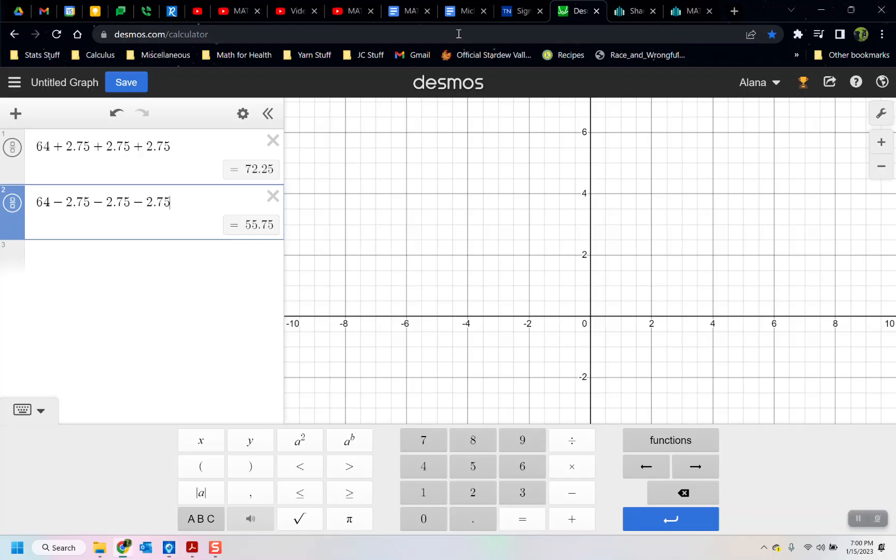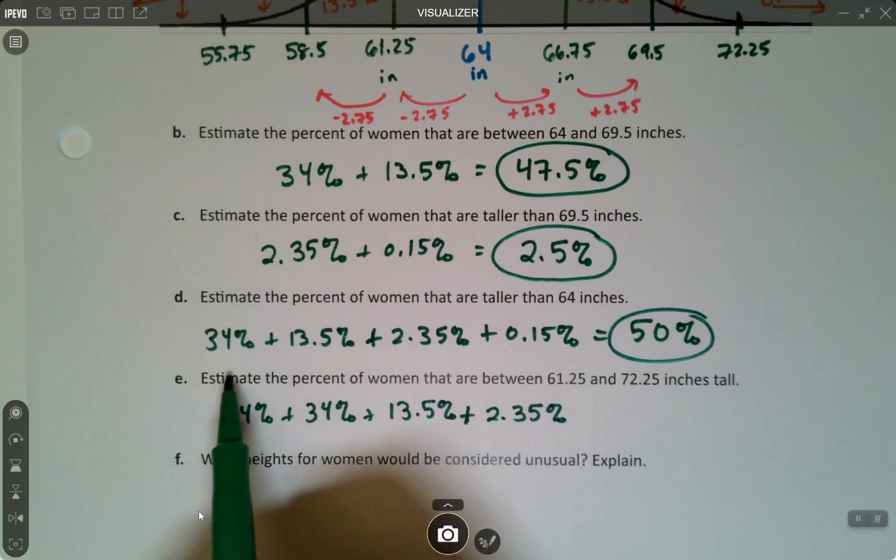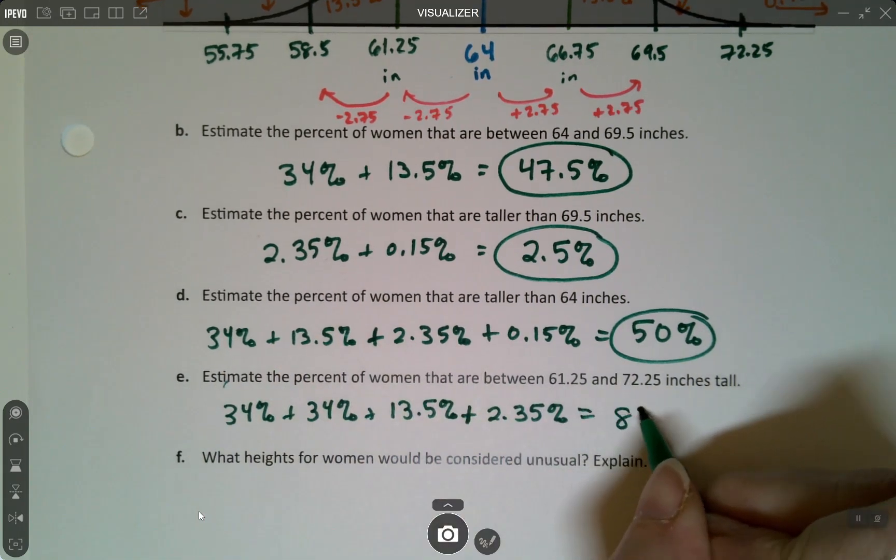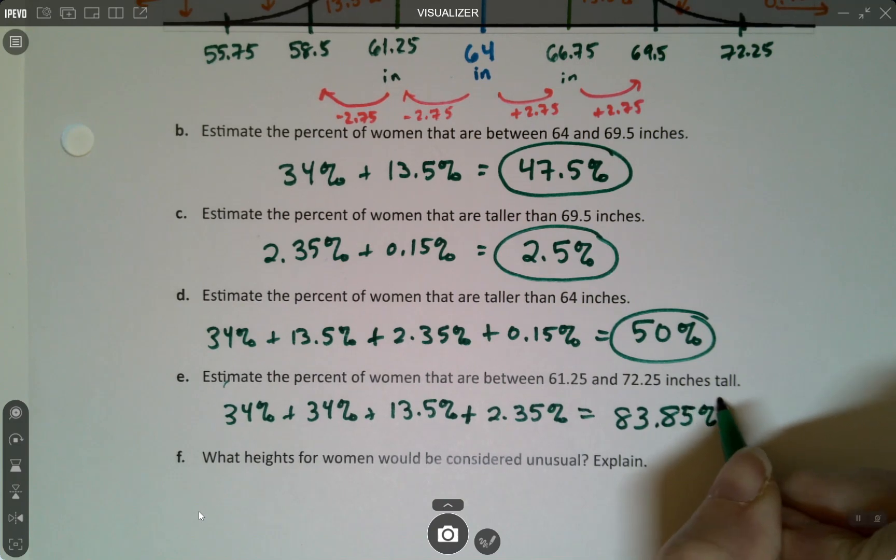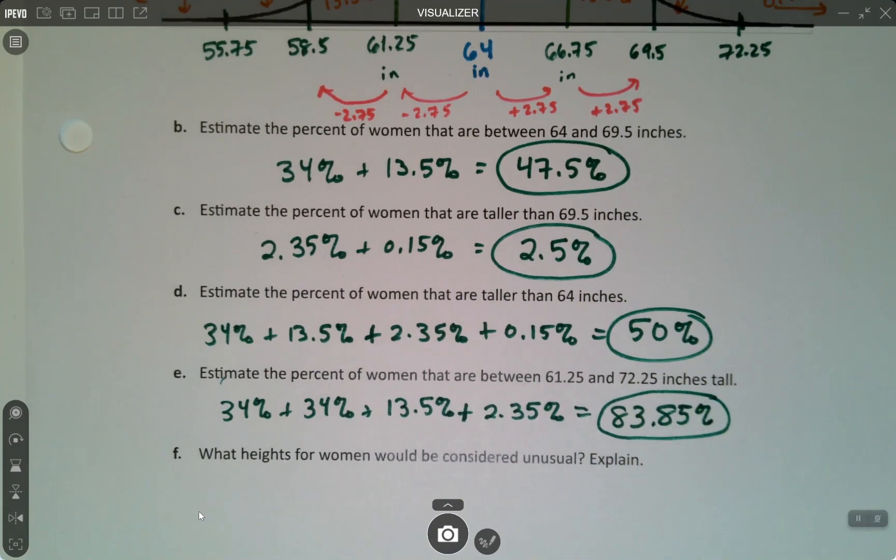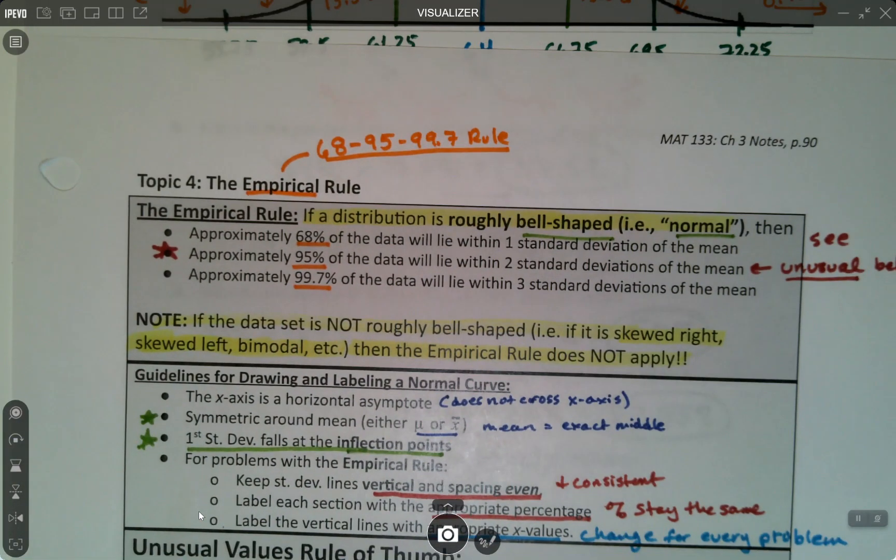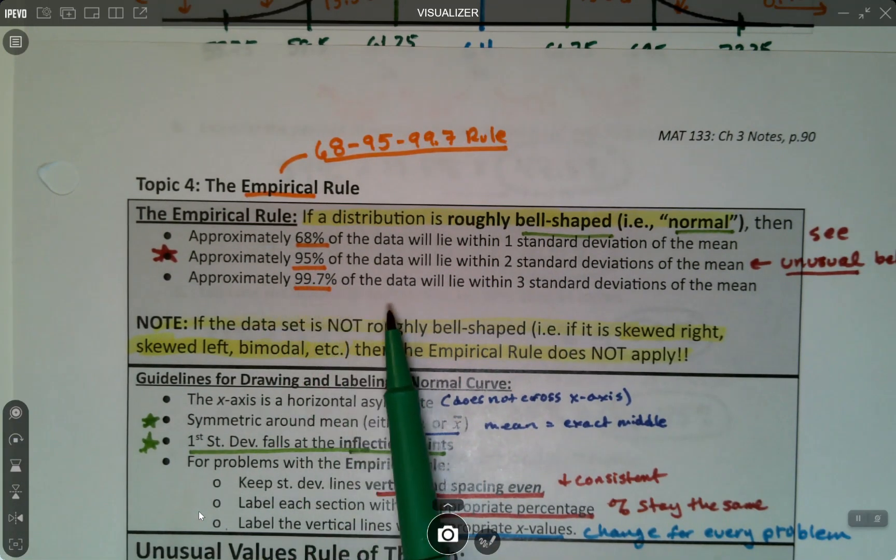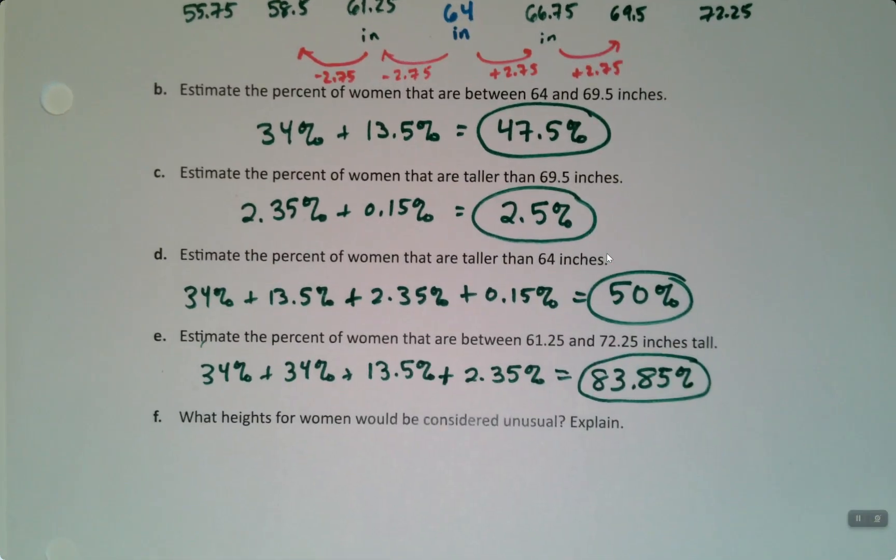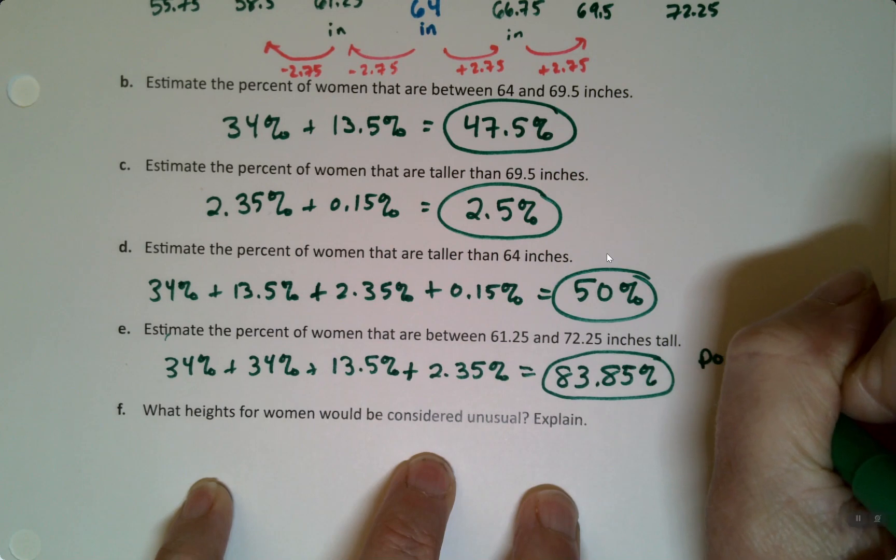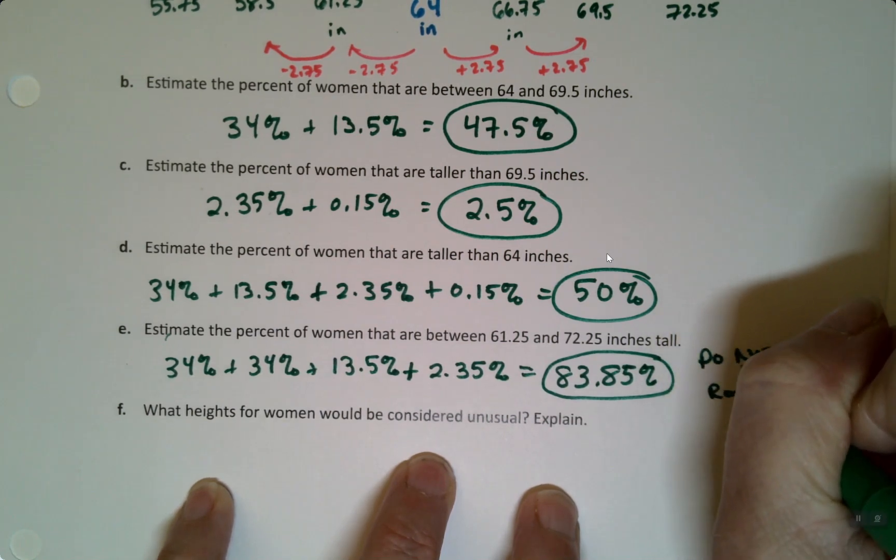So we want 34% plus 34% plus 13.5% plus 2.35%, which we can add those up. So 34 plus 34 plus 13.5 plus 2.35 makes 83.85%. Now, I know it says estimate, but this whole thing is an estimate. If you remember, the empirical rule itself is an estimate. It says roughly bell-shaped will be approximately this much percentage. So all of this was estimated anyway. It was already approximations. And so we're just using those approximations to get estimates. So don't round this. Do not round. Stick with the percentages given.